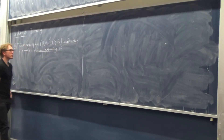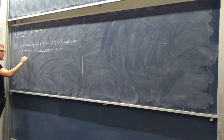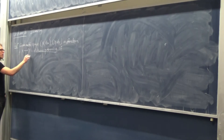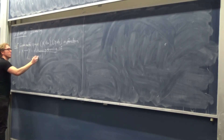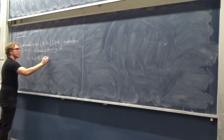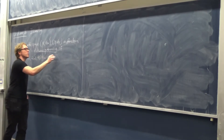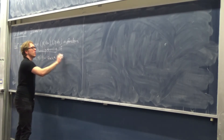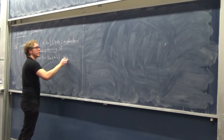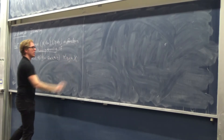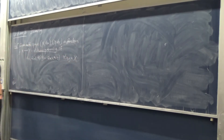Given metric spaces, a function between them is distance-preserving if the distance between F(x) and F(y) is the same as the distance between x and y, for all pairs x1, x2.